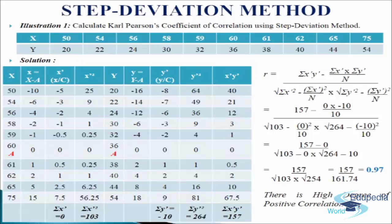In the next column we will write x dash equals to x divided by c. C is the common factor; we have taken 2 as the common factor. So minus 10 divided by 2 comes minus 5, minus 6 divided by 2 comes minus 3, minus 4 divided by 2 comes minus 2, minus 2 divided by 2 comes minus 1, minus 1 divided by 2 comes minus 0.5, 0 divided by 2 comes 0, 1 divided by 2 comes 0.5, 2 divided by 2 comes 1, 5 divided by 2 comes 2.5, and 15 divided by 2 comes 7.5. We will add up the values and get sigma x dash equals to 0.